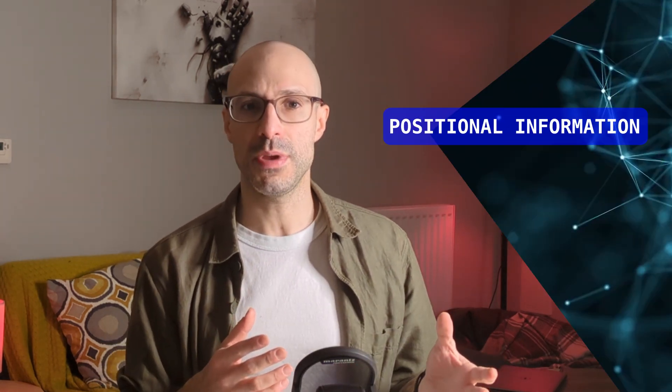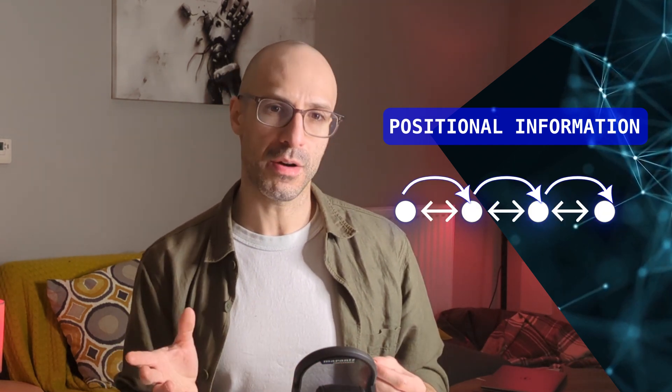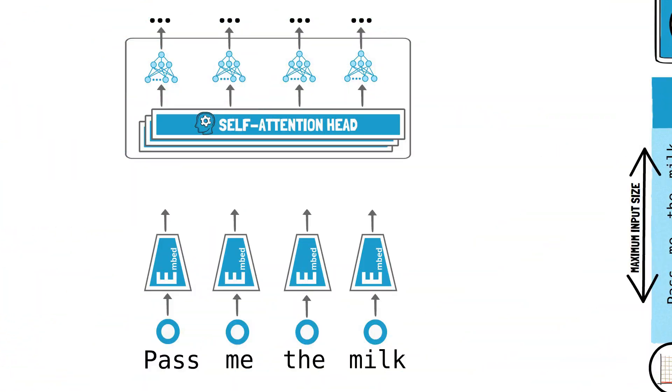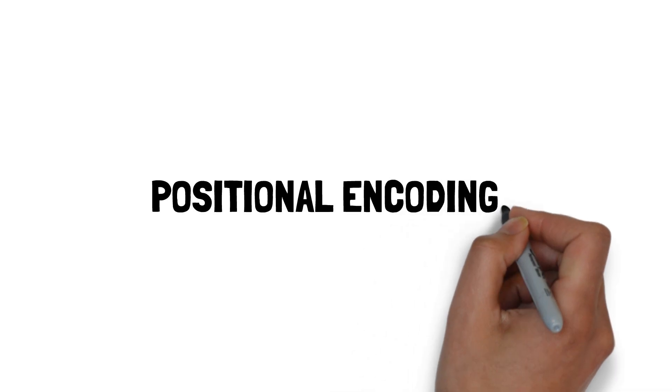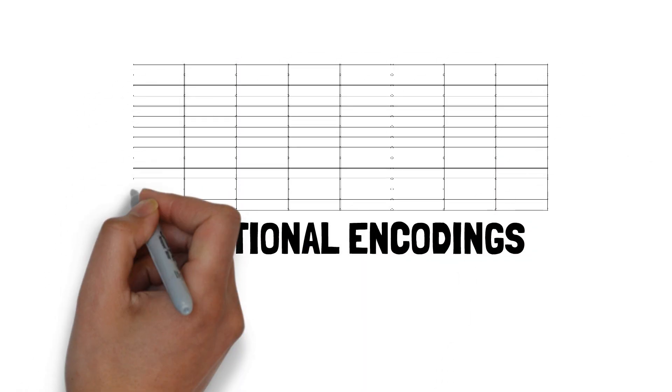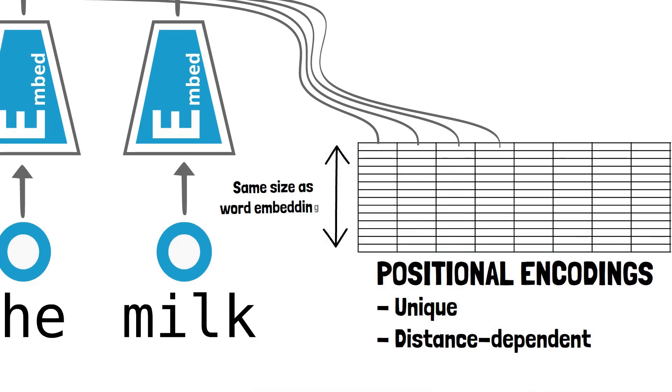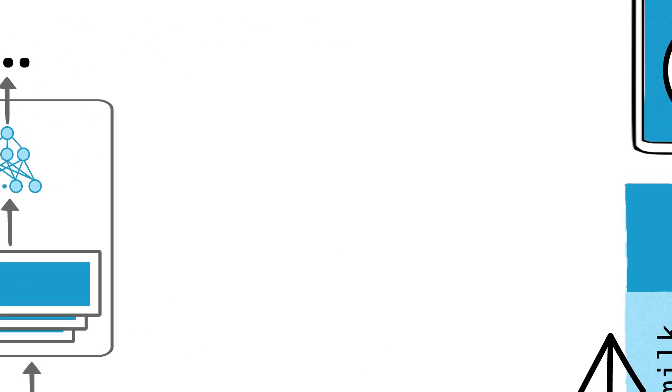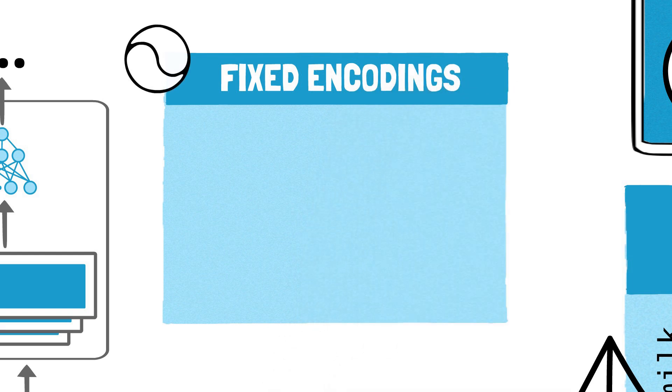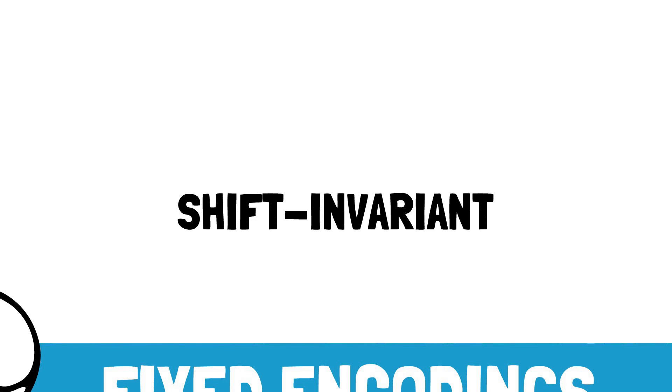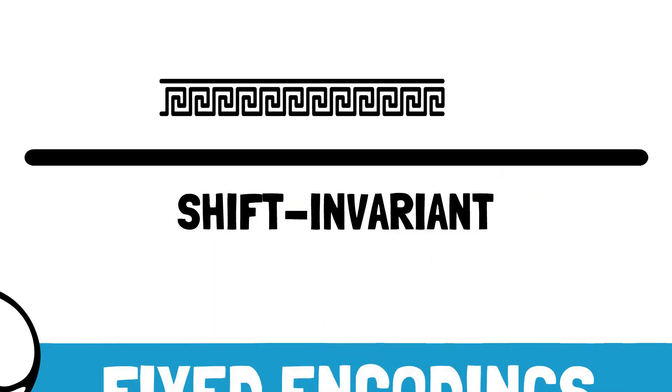Now, even with self-attention, our model is still missing something. In RNNs, the sequential processing inherently captures positional information and distance between words or tokens. But transformers remove recurrence, so they need an explicit mechanism to understand word order and relative positioning. To compensate for these, positional encodings are integrated with word embeddings. These encodings are distinct vectors corresponding to each input position, designed to be unique and distance-dependent. They have the same dimensions as the word embeddings so that they can be summed. The original transformer implemented these using fixed, non-learnable vectors generated from sine and cosine functions of different frequencies. These positional encodings are shift-invariant, meaning that the model can recognize patterns that remain the same regardless of their position in the input sequence.